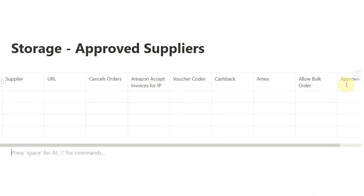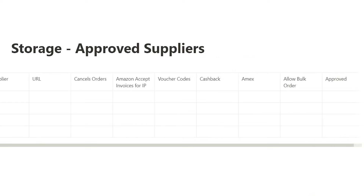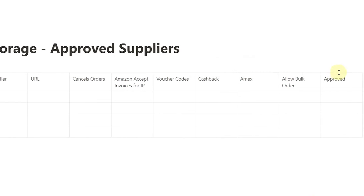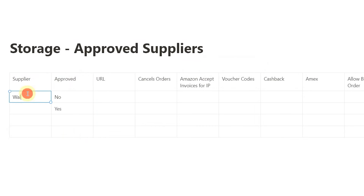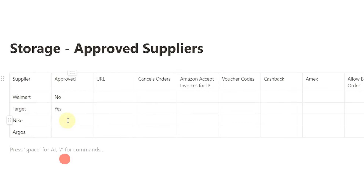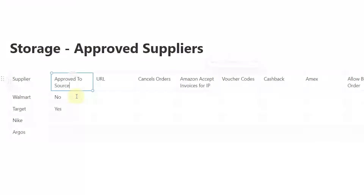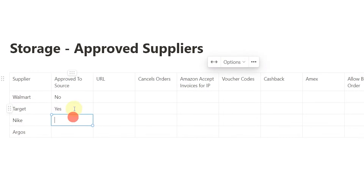And then we might have an 'approved' column. So we could move that column over — this could be 'no' or 'yes.' For example, if you're in the US: Walmart, Target, Nike; or Argos if you're in the UK. So it might be 'approved to source': no, no, yes, no. And you can do it that way.